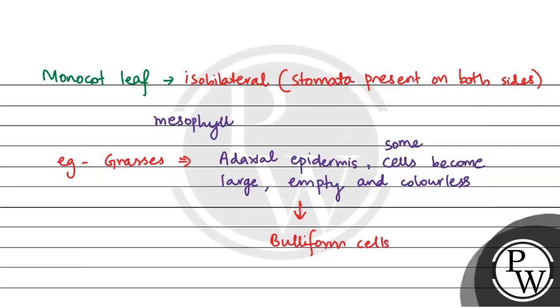So buliform cells' main function: when they are turgid, they expose the leaf surface. And when they are flaccid, they curl the leaf surface and minimize water loss.